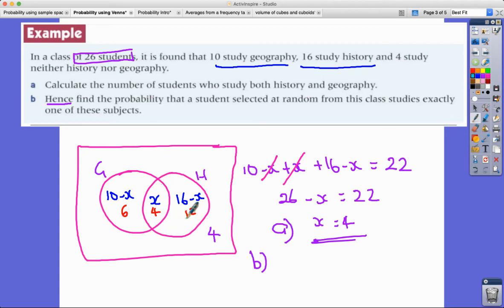So the number of people who just do geography is 6, the number of people who just do history is 12. 6 plus 12 is 18 out of 26, and they're both even numbers I could simplify that a little bit, so 9/13. There's a 9 in 13 chance that a student selected at random from this class studies exactly one of these subjects.